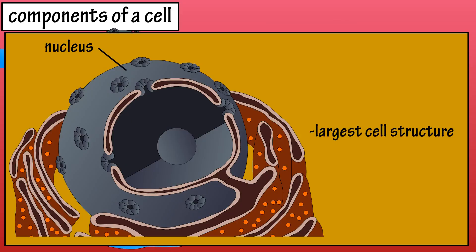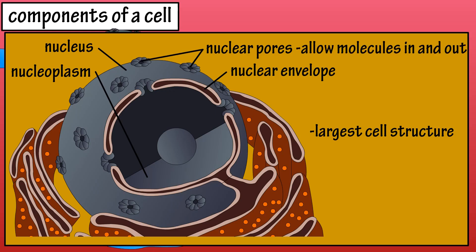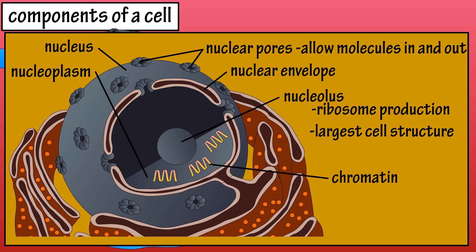The nucleus is the largest of all cell structures. It has two membranes that form a nuclear envelope that, along with nuclear pores, encloses the nucleoplasm. The nuclear pores allow certain molecules into and out of the nucleus. Inside the nucleus is the nucleolus, which is comprised of protein and RNA, and is responsible for producing the large and small subunits of ribosomes. The nucleus also contains DNA, and in non-dividing cells it appears as tiny bunches called chromatin.